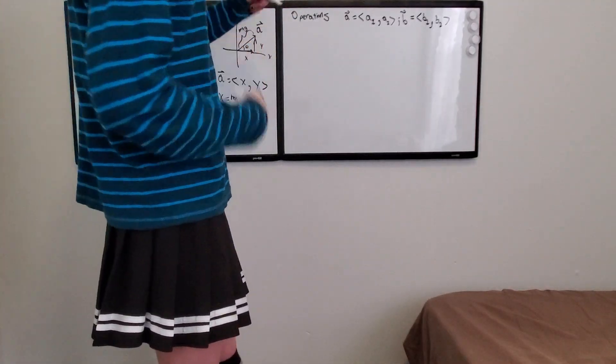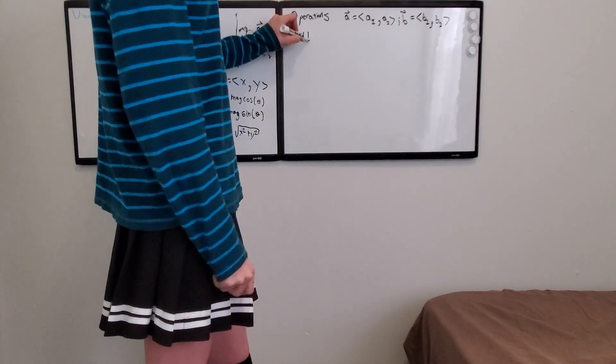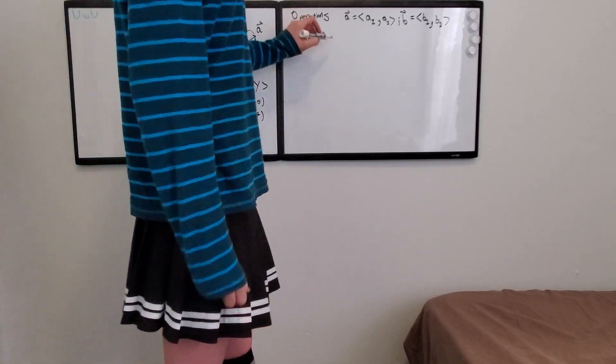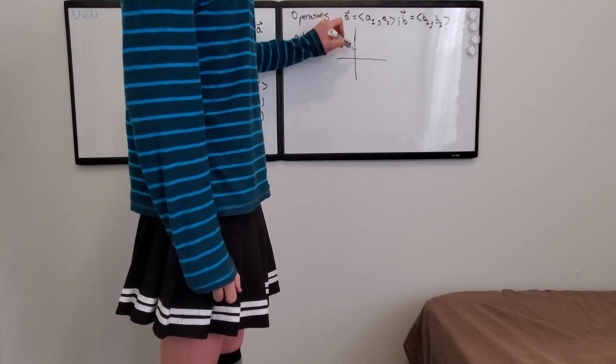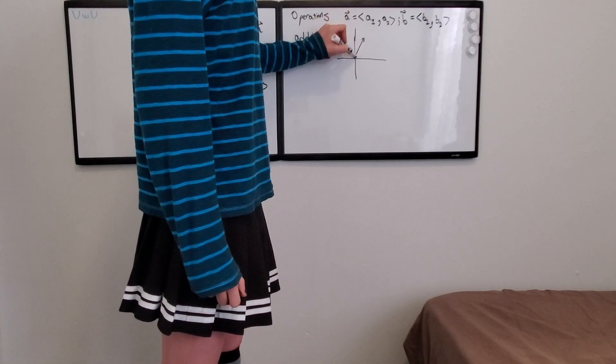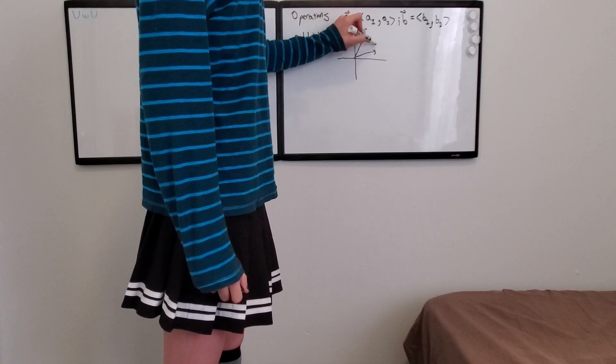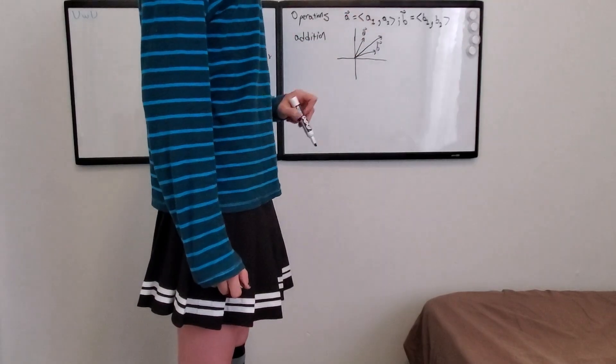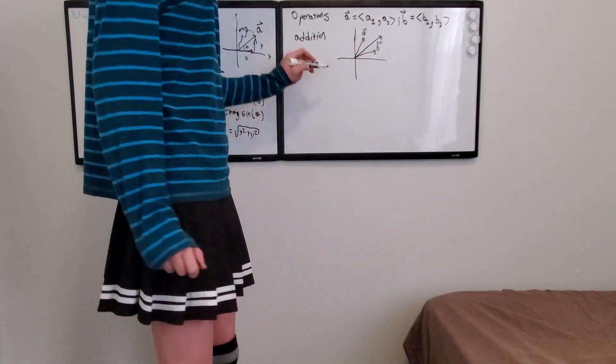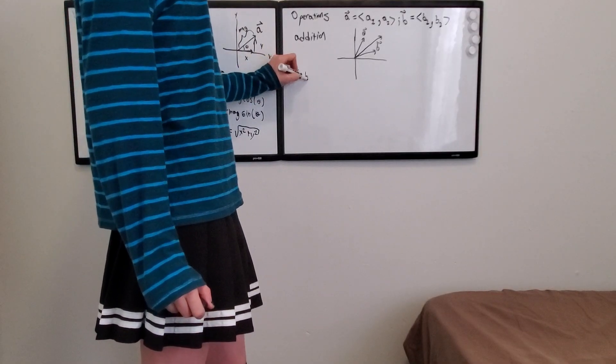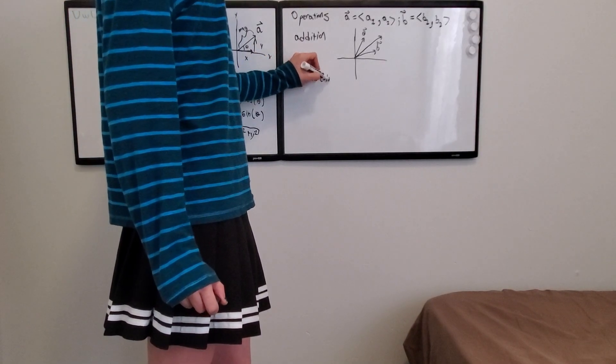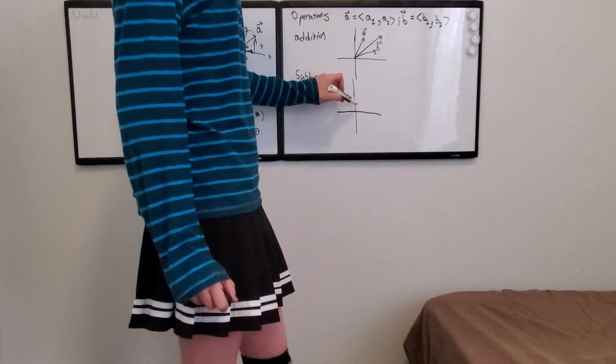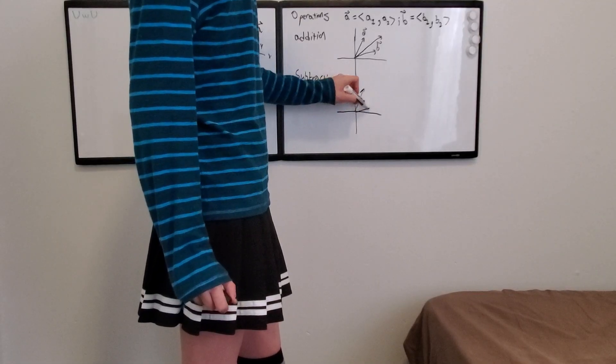So on a graph, if you wanted to represent addition, you could draw them like this. Let's say you had a vector A and a vector B. Then A plus B is going to look something like this. It's going to be longer than both of them, somewhere in between.